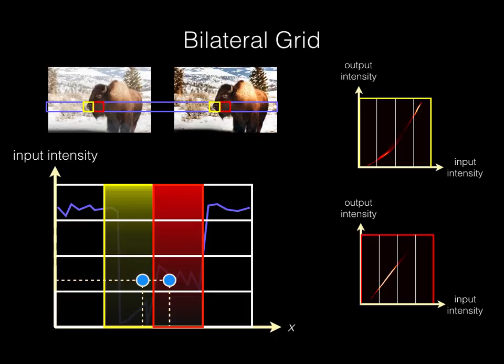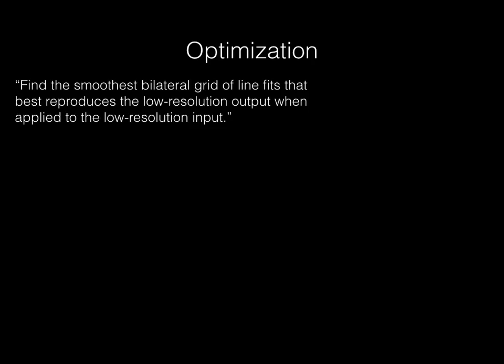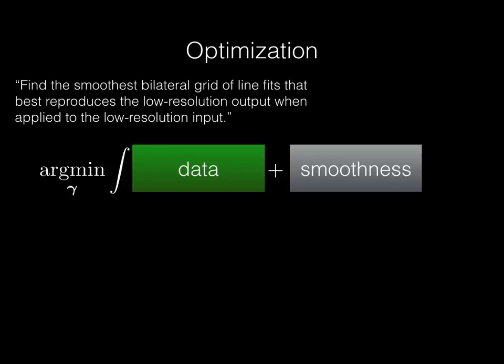With this intuition, it is easy to write down our complete transformation model as an optimization. In words, we want to find the smoothest bilateral grid of line fits that best reproduces the low-resolution output when applied to the low-resolution input. This can be expressed as a minimization of an objective function that comprises data and smoothness terms.